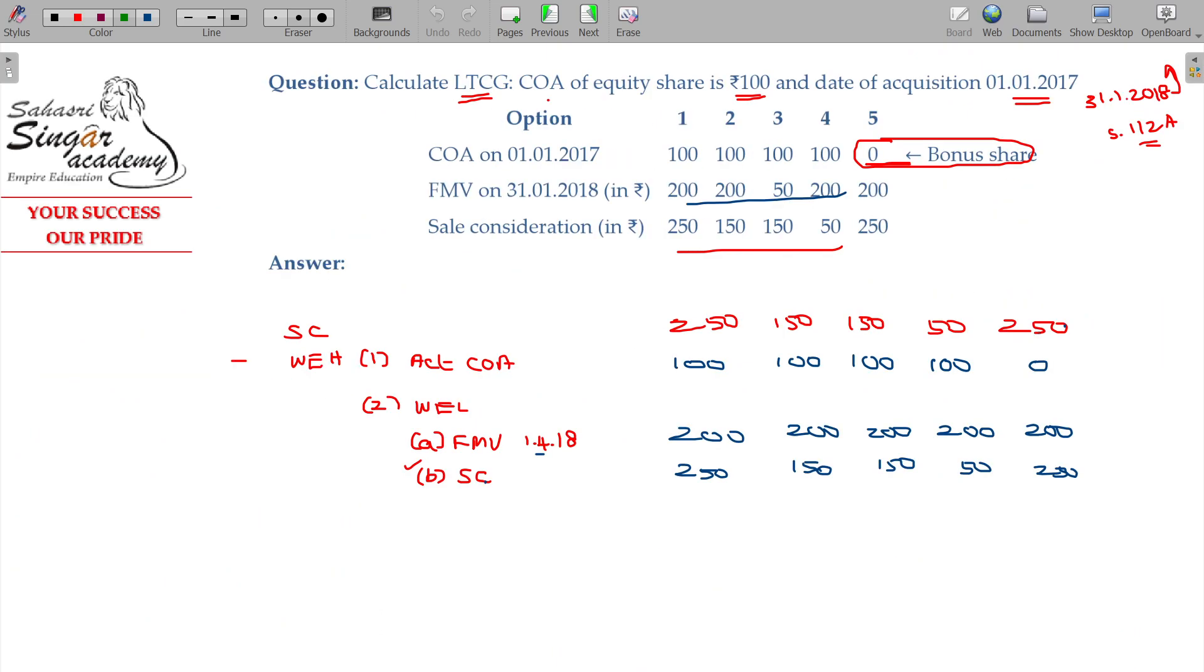So between these two, whichever is lower, what is the value? What is the value? 250, 200, 150, 150, 100, 0 or 200. That's the logic. That's the logic.